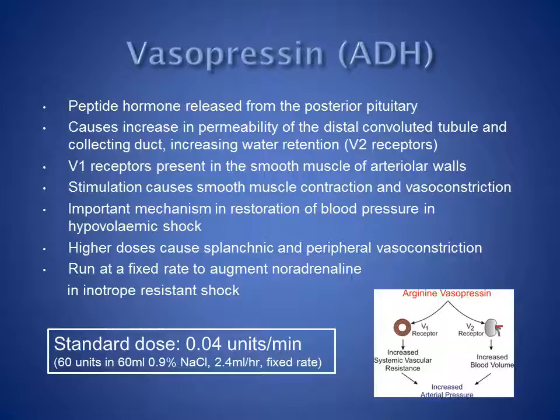Vasopressin, also called antidiuretic hormone, is a peptide hormone released from the posterior pituitary. It causes an increase in permeability of the distal convoluted tubule in the kidney and the collecting duct, causing increased water retention through V2 (vasopressin-2) receptors. There are V1 or vasopressin-1 receptors present in the smooth muscle of arteriolar walls, and stimulation of these causes smooth muscle contraction and vasoconstriction.